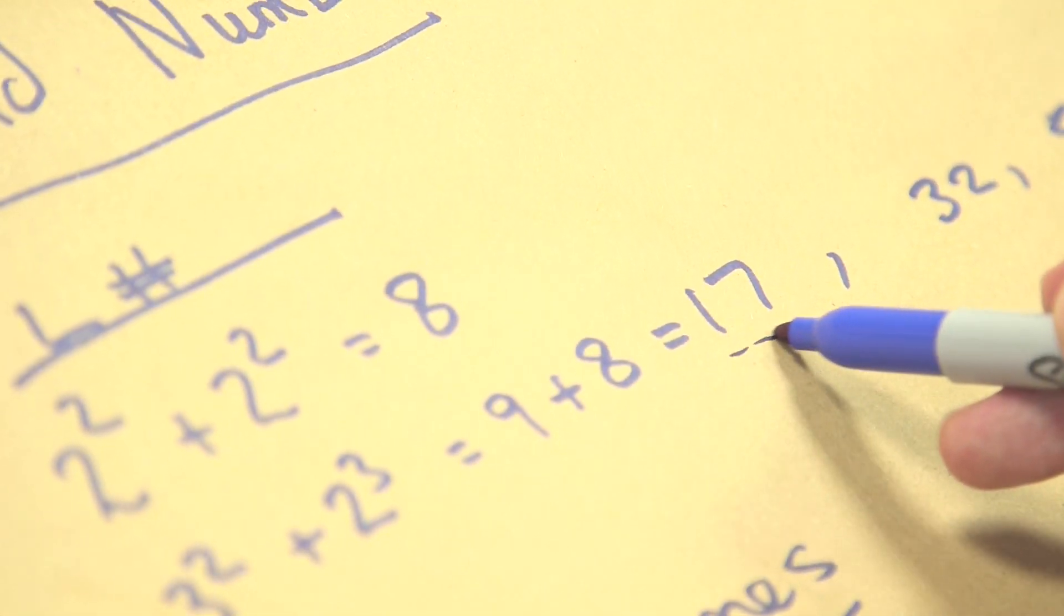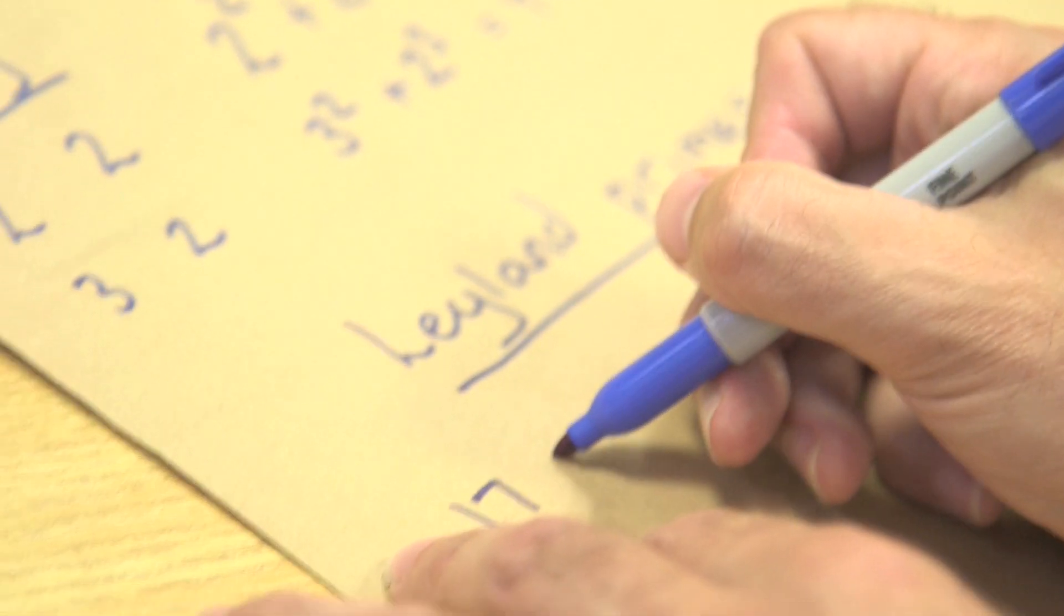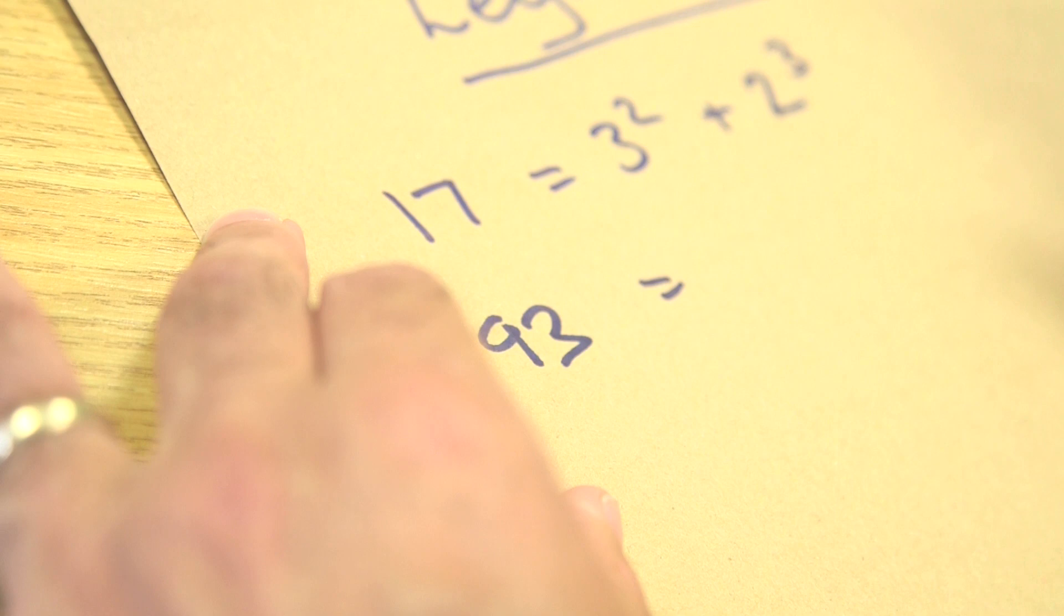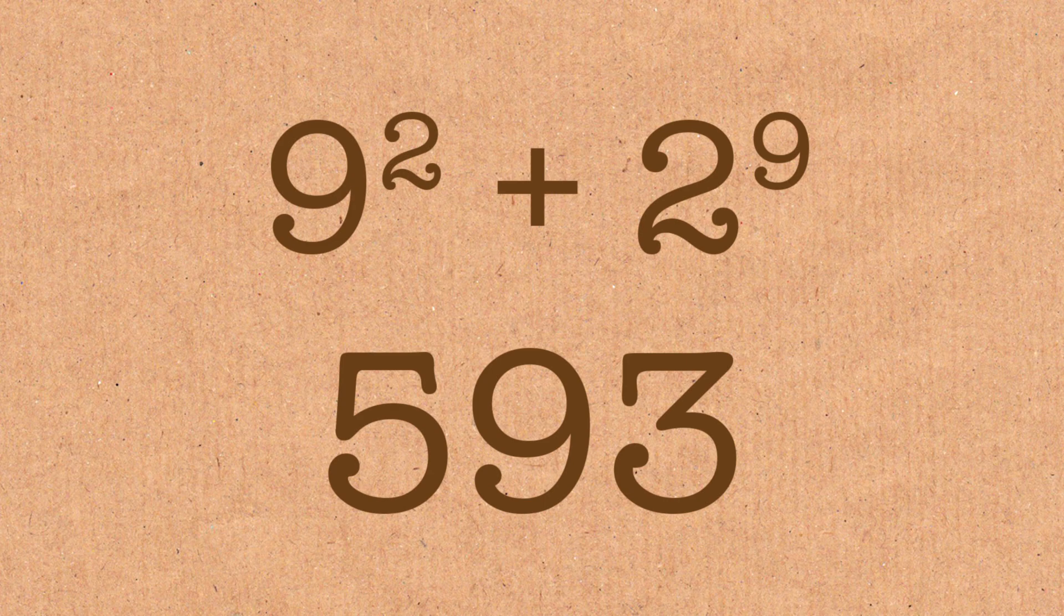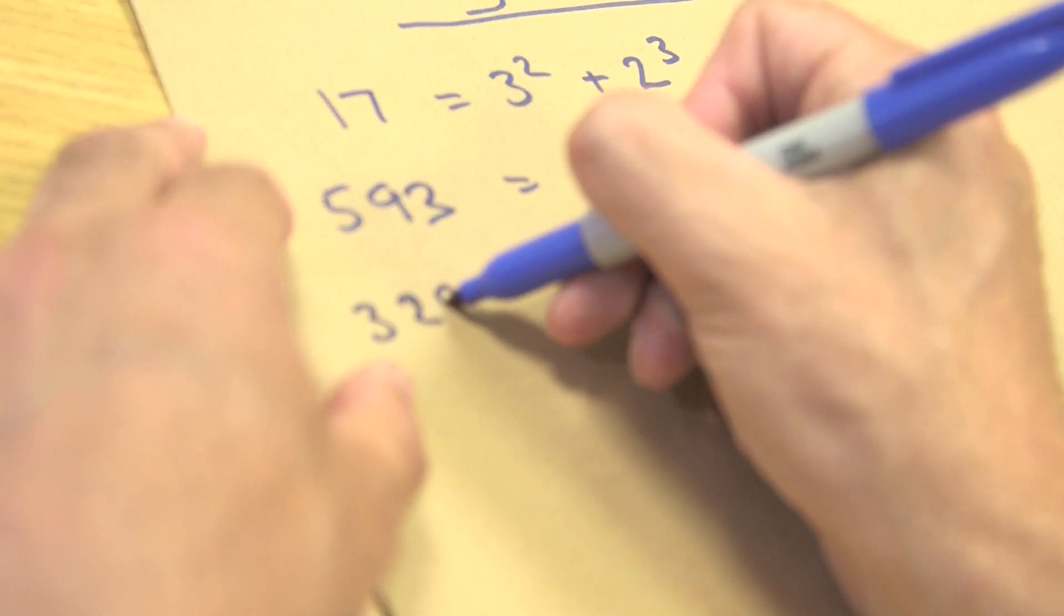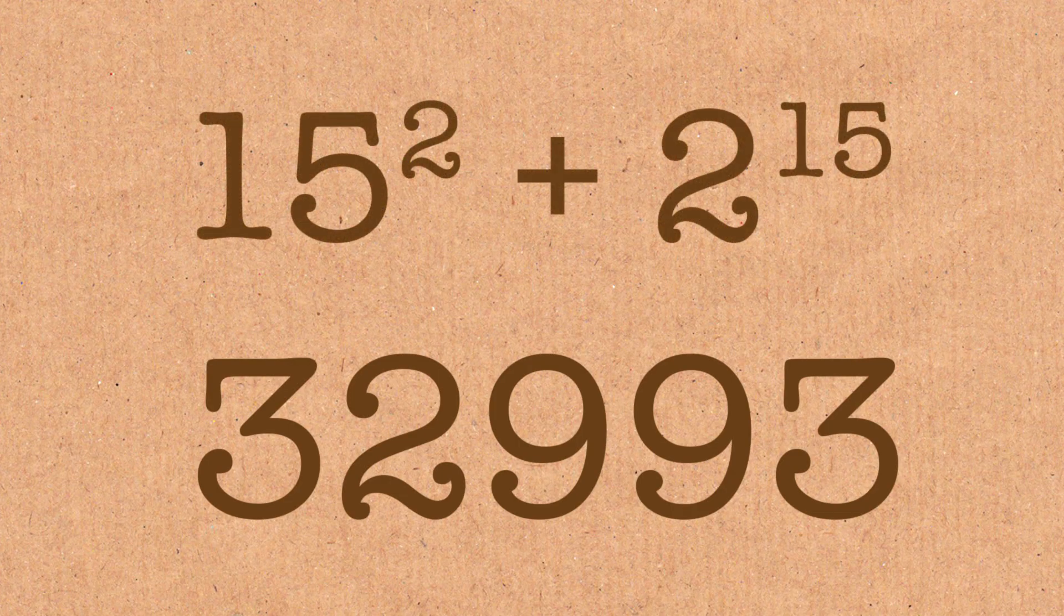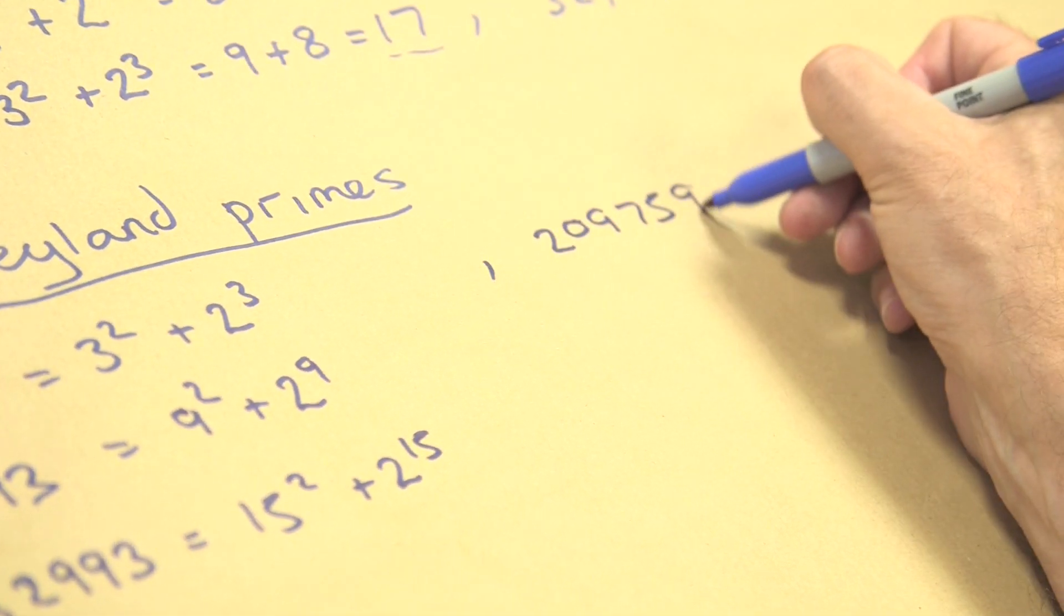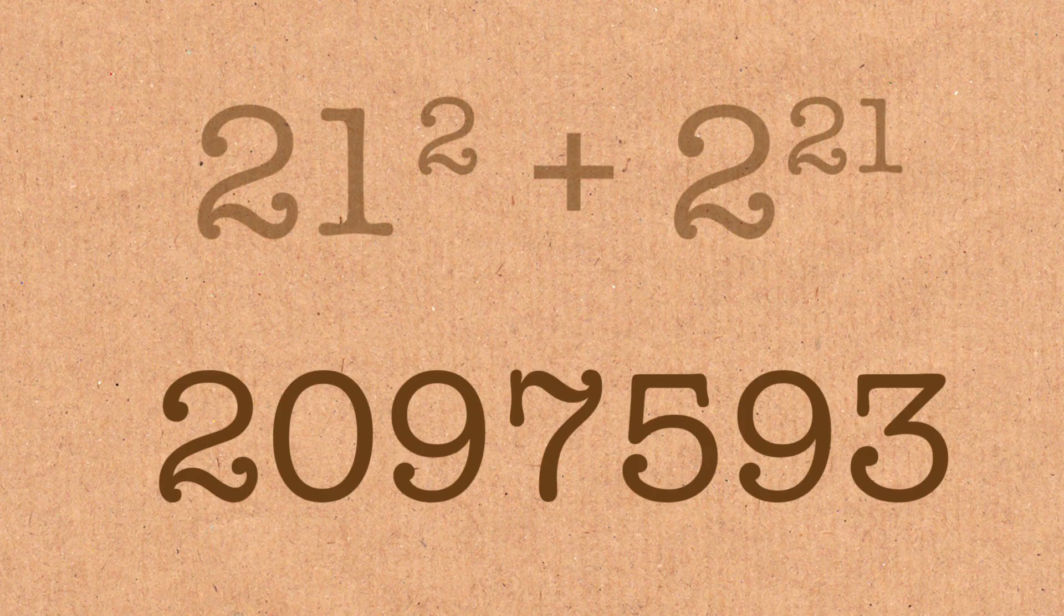We've met our first one. 17 is our first Leyland prime, and it's, of course, 3 squared plus 2 cubed. And then, they're not that frequent, right? So, 593 is made up of 9 squared plus 2 to the power 9. That's a prime. And then, we've got 32,993. That's made up of 15 squared plus 2 to the power 15. And then, you can go on. 2,097,593 is made up of 21 squared plus 2 to the power 21.